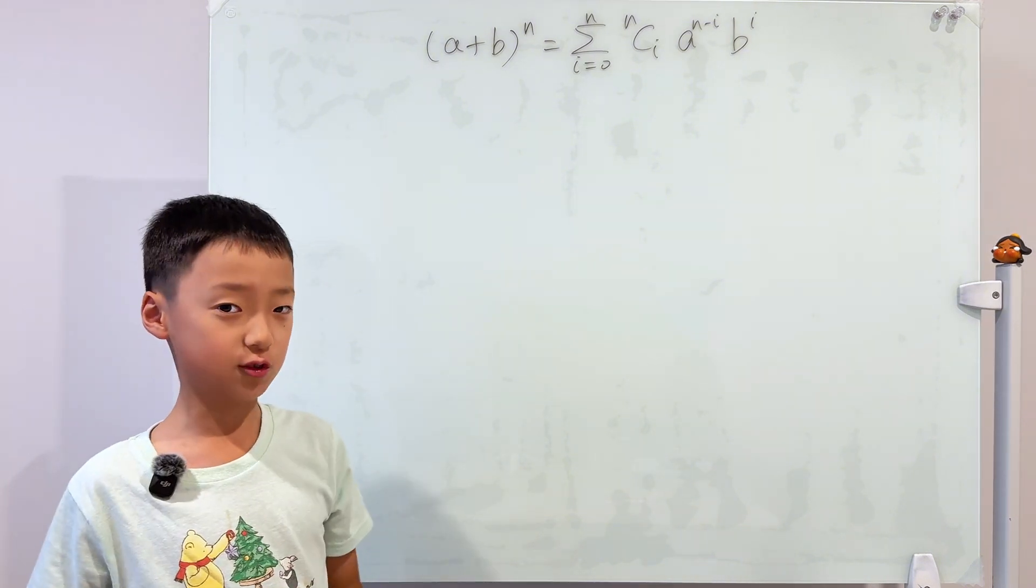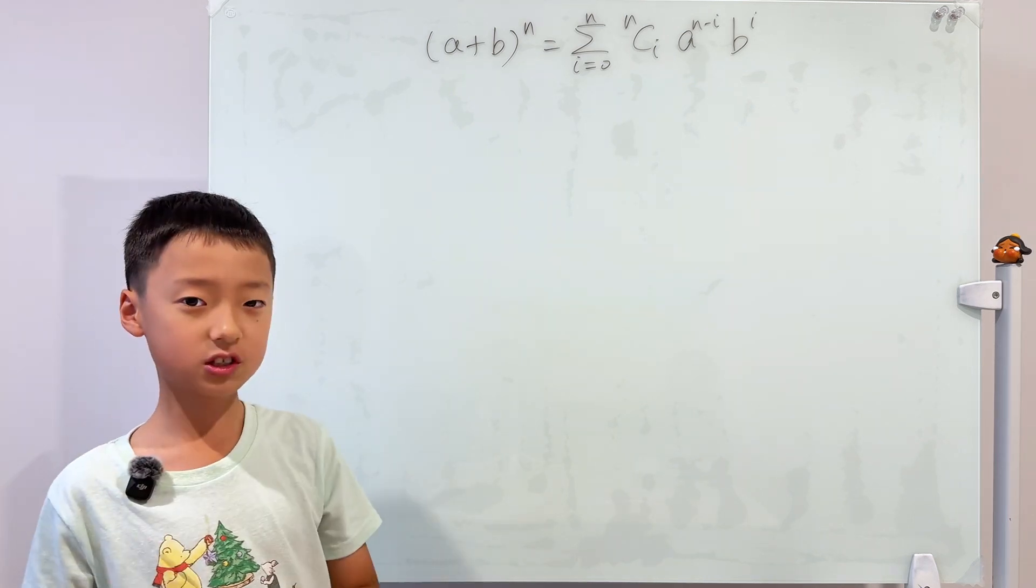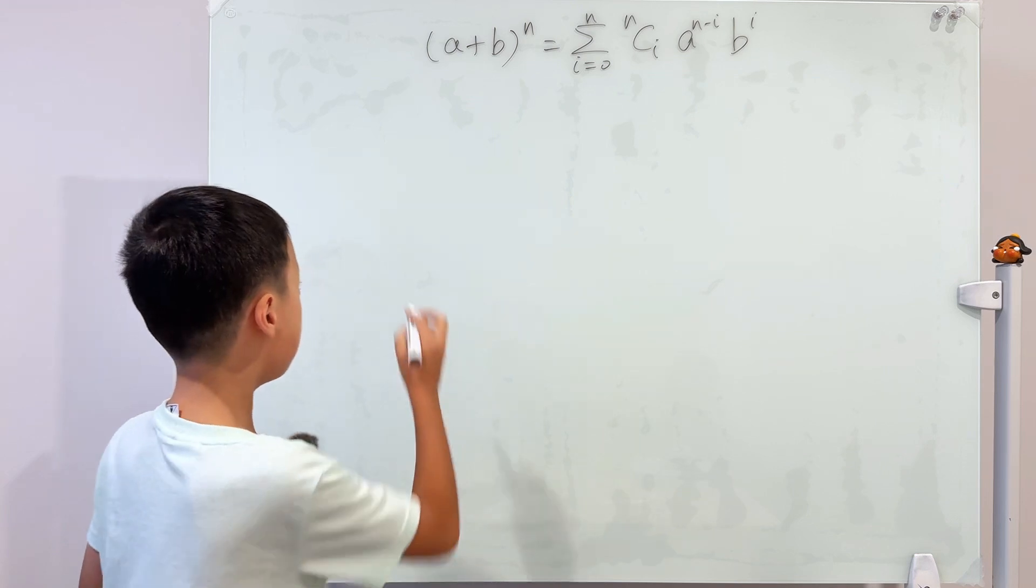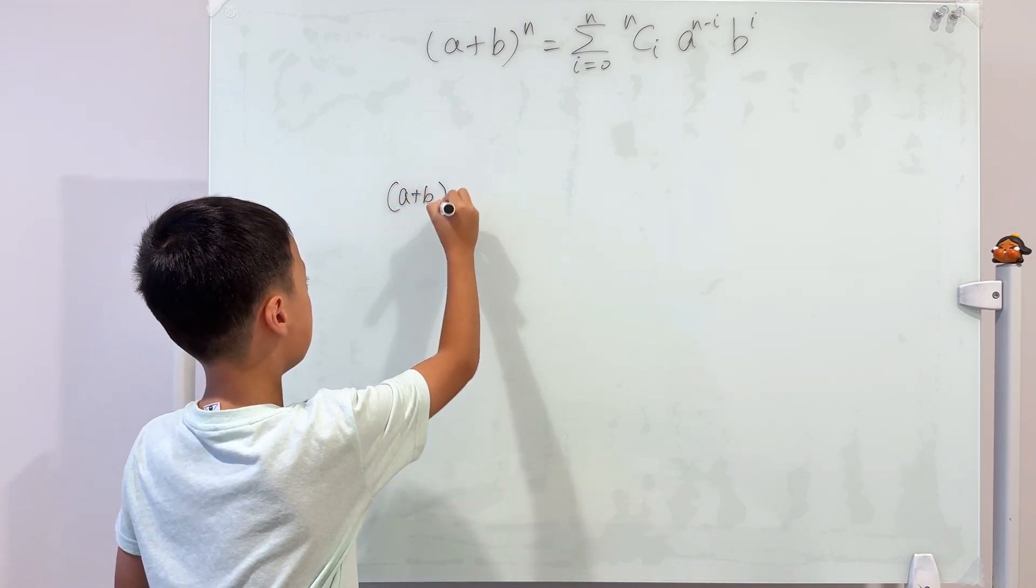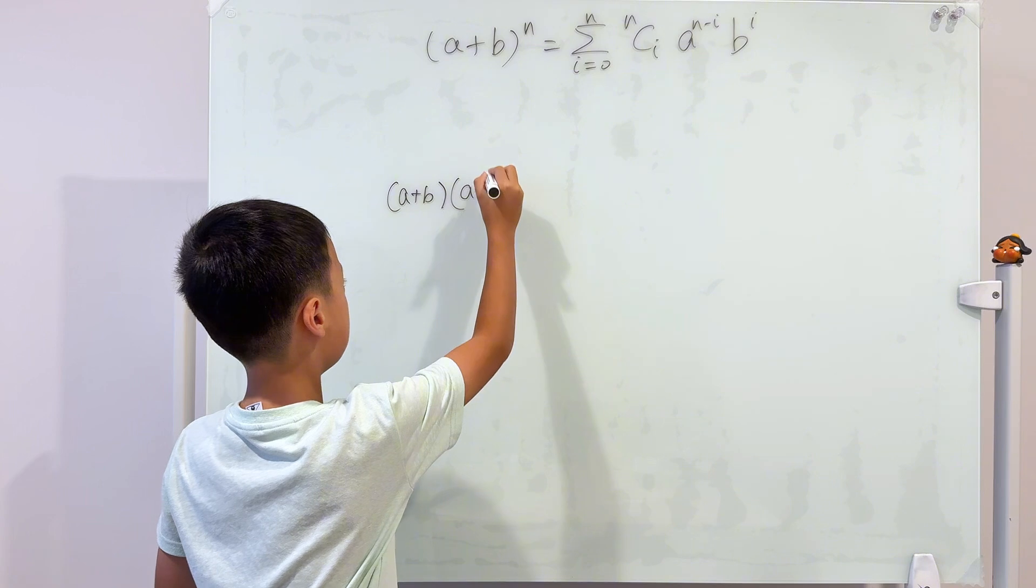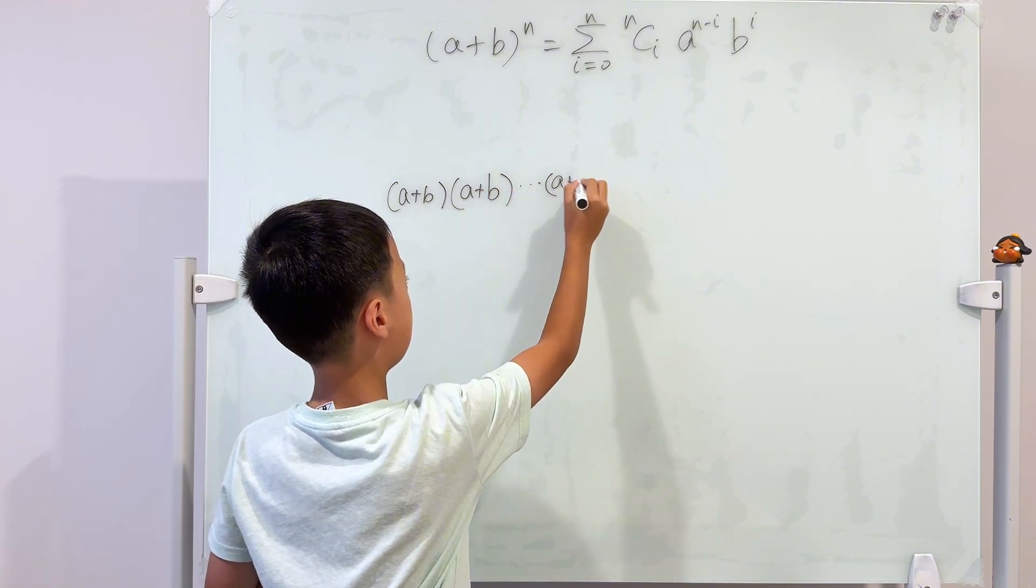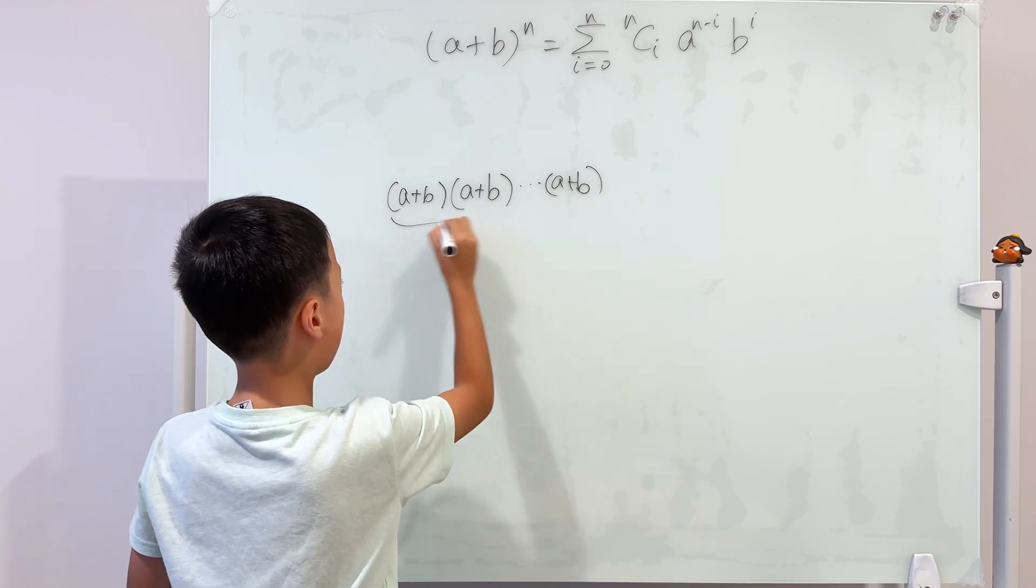Let's do the most popular way. The most popular way is to use combinatorics. So we can change a plus b to the power of n into a plus b times a plus b times a plus b, and there are n brackets.